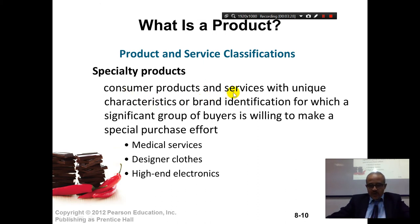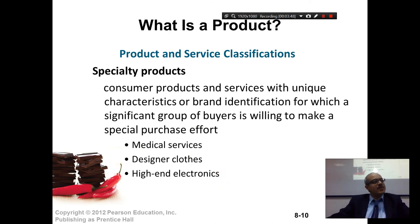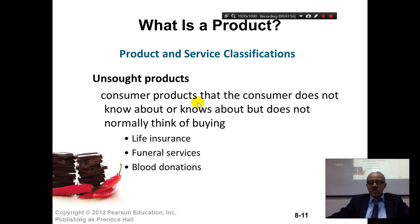Specialty products are consumer products and services with unique characteristics or brand identification for which a significant group of buyers is willing to make a special purchase effort — such as medical services, designer clothes, or high-end electronics. For example, if you want to buy an Apple laptop, you will only buy from that specific brand. Unsought products are consumer products that the consumer does not know about, or knows about but does not normally think of buying — such as life insurance, funeral services, and blood donations.